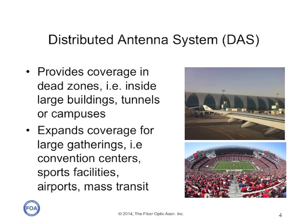In order to provide coverage in areas that we call dead zones, where cellular signals don't penetrate — like inside large buildings or tunnels, or even on some campuses — or to expand the coverage for large gatherings, like a large number of people typical in convention centers, sports facilities, airports, and mass transit, we now use distributed antenna systems to provide that coverage.